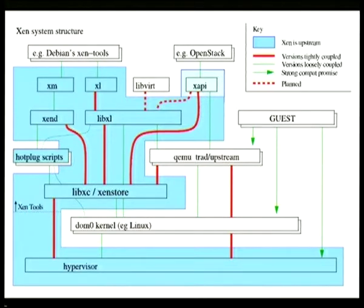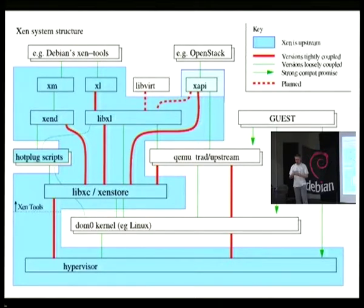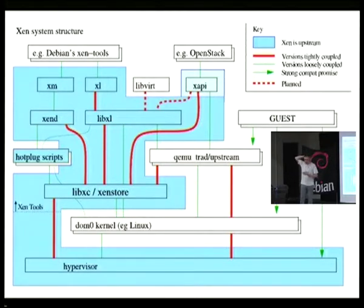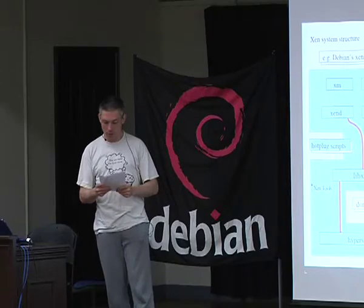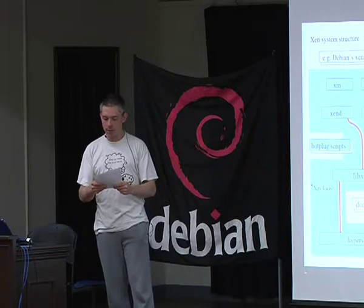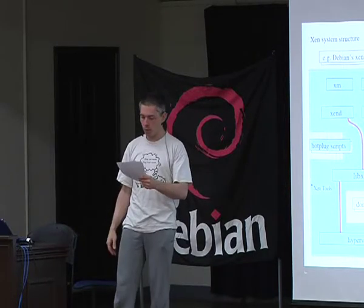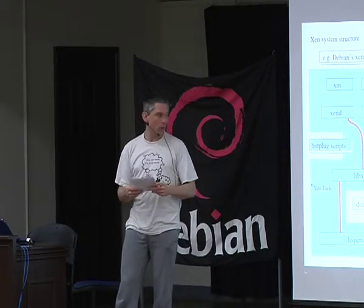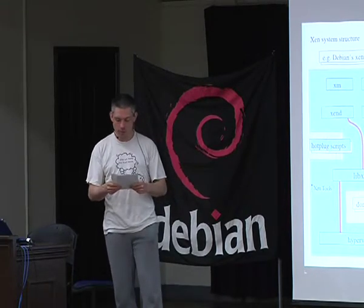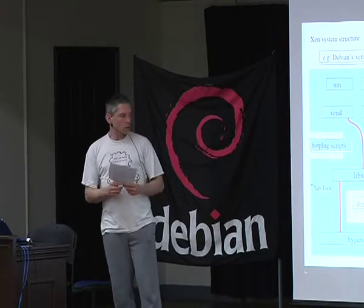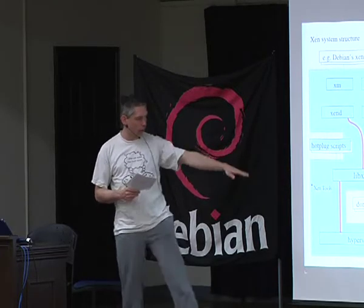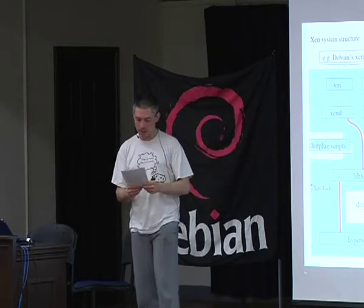This means that Dom0 needs to be able to support all the facilities for direct access to guests needed by the management tools, and it also needs to cooperate with Xen to manage all the hardware. Because of the way Linux is developed and the fact that users would constantly need new versions of the Dom0 kernel for reasons not related to Xen — like running on new hardware or fixing security bugs — trying to maintain our own stable branch of Linux is a non-starter. So instead, we have a reasonably loose coupling between the Dom0 kernel and the other components of the Xen system.